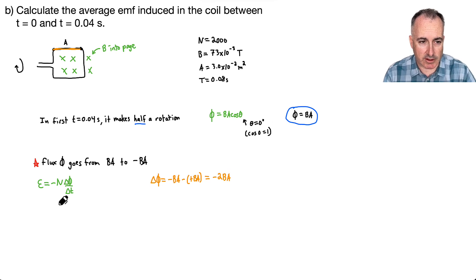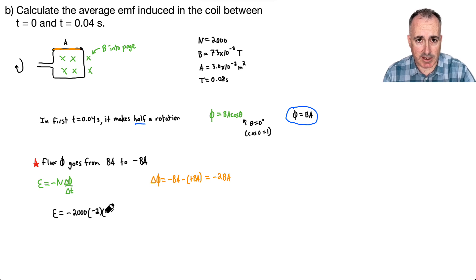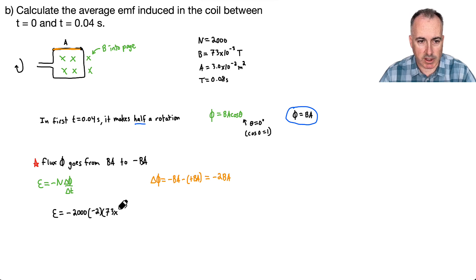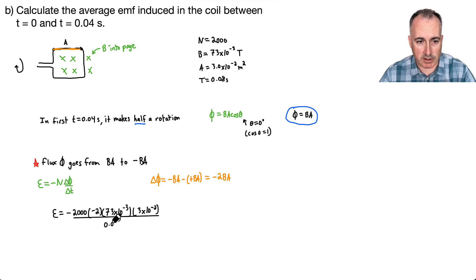Now I have the induced EMF: epsilon equals minus N times delta phi over delta T. That means minus N, which is 2,000, times delta phi, which is minus 2 times B — which is 73×10⁻³ — times A, which is 3×10⁻². All that divided by delta T, which is 0.04 — that's my total time elapsed.